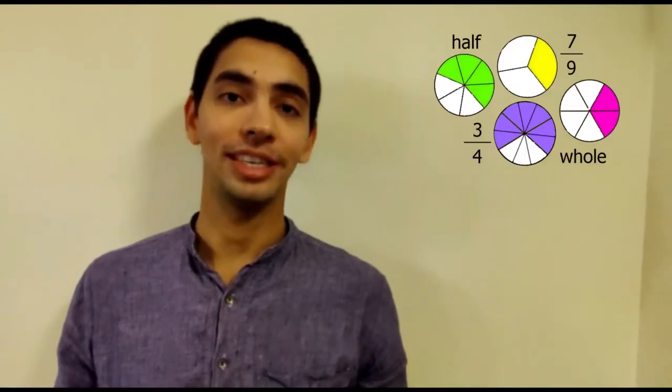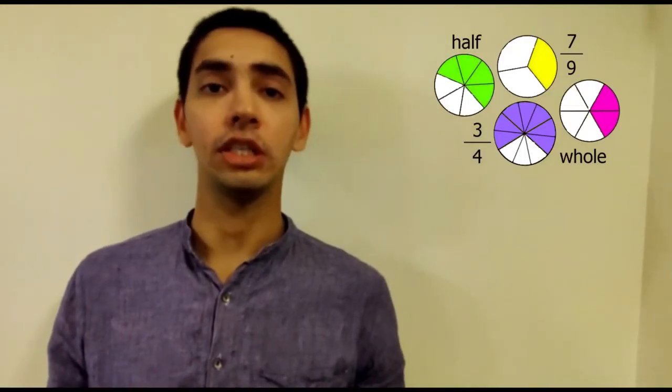You must be aware that there are different types of numbers: natural numbers, whole numbers, integers, fractions, etc. Now, we will learn to see numbers as collections, as families, starting with whole numbers.